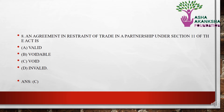An agreement in restraint of trade in a partnership under Section 11 of the Act is — (a) valid, (b) voidable, (c) void, or (d) invalid. The correct answer is option C — an agreement in restraint of trade in a partnership under Section 11 of the Act is void per se.